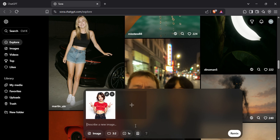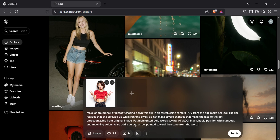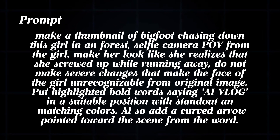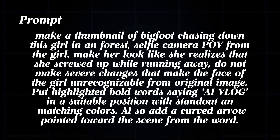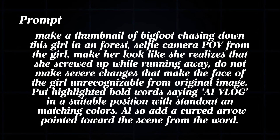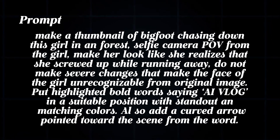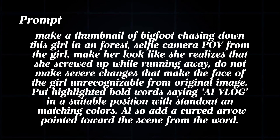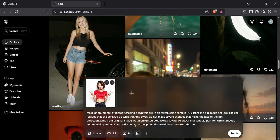This image will help Sora generate results that actually include your character in the final thumbnail. For the prompt, I used a specific description to tell the AI exactly what I wanted. It says: making thumbnail of Bigfoot chasing down this girl in a forest. Selfie camera POV from the girl. Make her look like she realizes that she screwed up while running away. Do not make severe changes that make the face of the girl unrecognizable from the original image. Put highlighted bold words saying 'AI vlog' in a suitable position with standout and matching colors. Also add a curved arrow pointed toward the scene from the word. Once you've entered your prompt, just click the remix button, and within a few minutes you'll get your results.